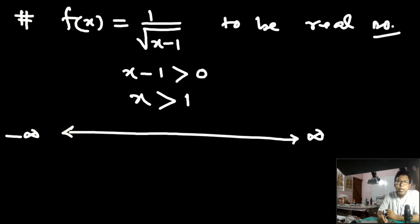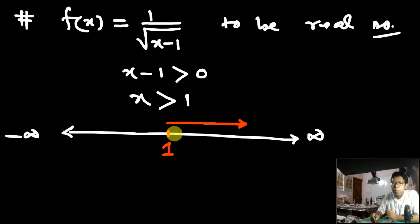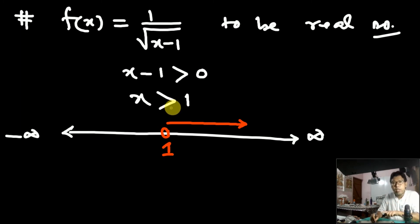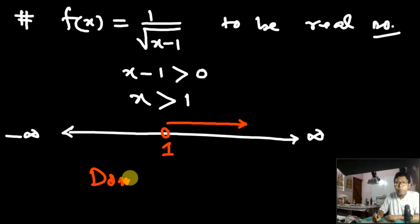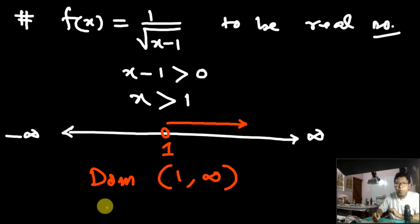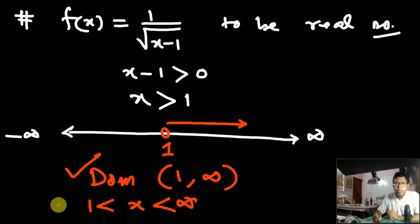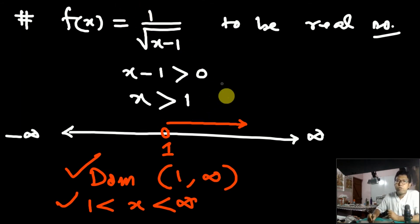Draw the real line: the point 1 is here. Since x > 1, you go to the right side of 1 toward infinity, but excluding 1, because it is x greater than 1 — not greater than or equal to 1 — since √(x−1) is in the denominator. So the domain of this function is the open interval (1, ∞), or equivalently 1 < x < ∞.